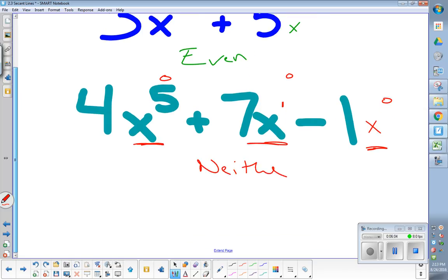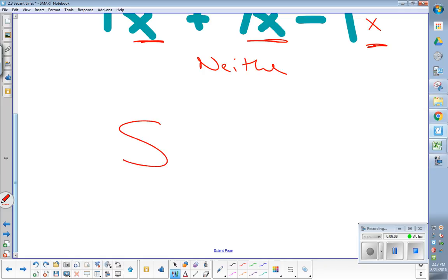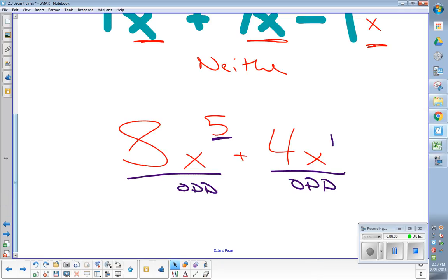Let's do one last one. Even, odd, or neither. Show me one. Even, odd, or neither. This chunk, odd. Because it's 5. This chunk, odd. Because it's 1. Since they're both the same, it's odd. Easy enough? Cool. That's even.